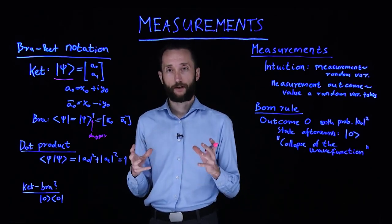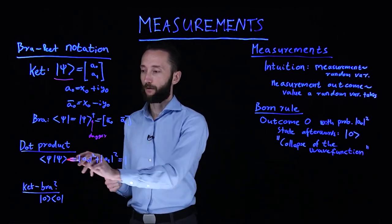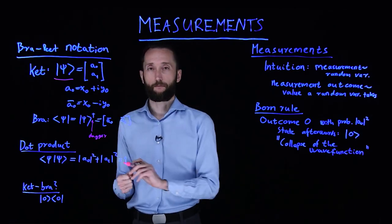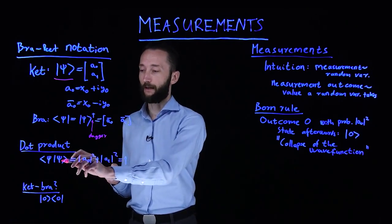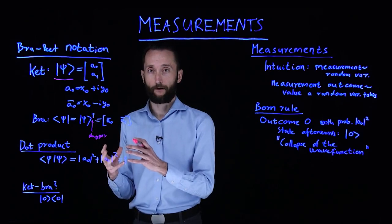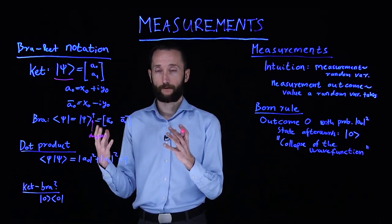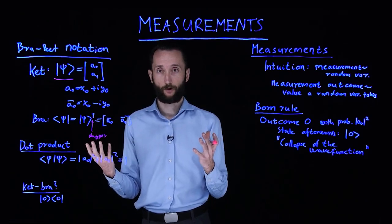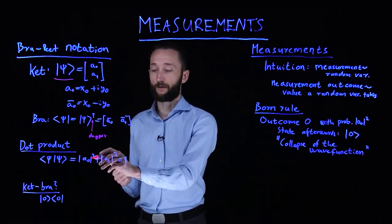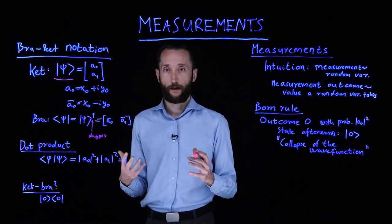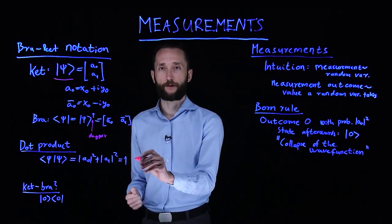With this notation, it's very easy to write dot products. If we take the bra of some arbitrary state psi and we follow it up by a ket, that's going to be the product of a row vector with a column vector. In other words, it's going to be a dot product. So it expands as the absolute value of a_0 squared plus the absolute value of a_1 squared. We know that since the vector is normalized, this is just 1.